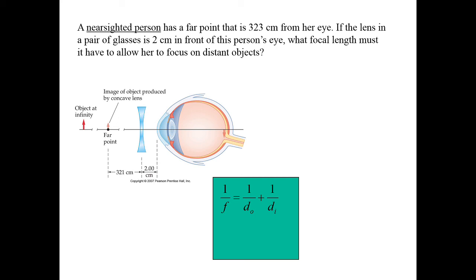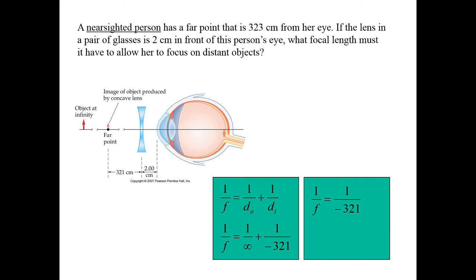The distance from the eye to the far point is 323 centimeters. We apply a small correction since there are 2 centimeters between the eye and the lens, so the distance from the lens to the far point is 321 centimeters — giving an image distance of negative 321 centimeters. The object is at infinity, so 1 over infinity is just 0, which means the focal length equals 1 over negative 321. Solving this, we find the focal length is negative 321 centimeters.